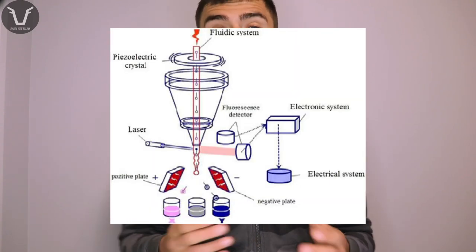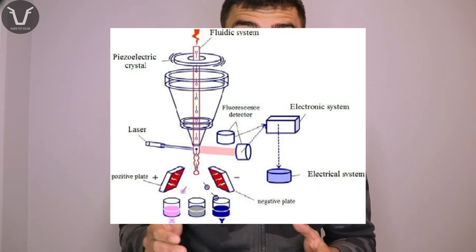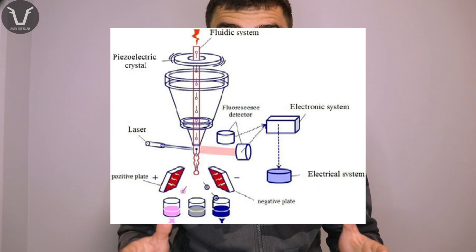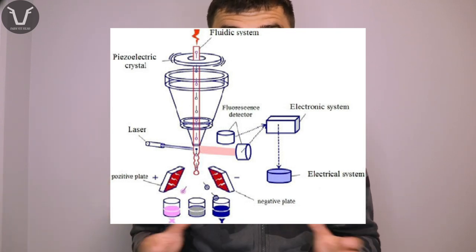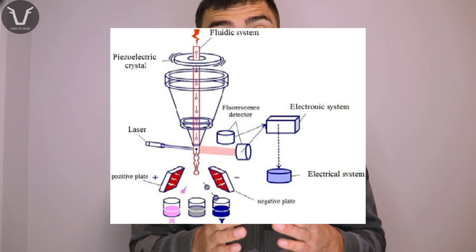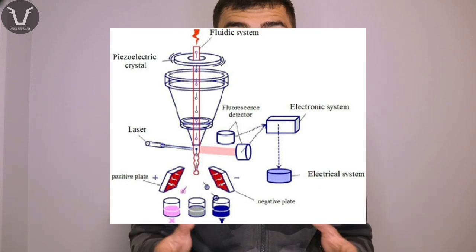Remember, every embryo inherits an X from its mother. That Y chromosome is significantly smaller than the X chromosome, which gives the two categories of sperm a different mass. If we use a clever machine to apply an electrical charge to a stream of sperm and then pass that stream through an electromagnetic field, they end up being deflected depending on the X or Y status — and therefore the mass — of that sperm. They get deflected to different extents, so they can be collected at different points.